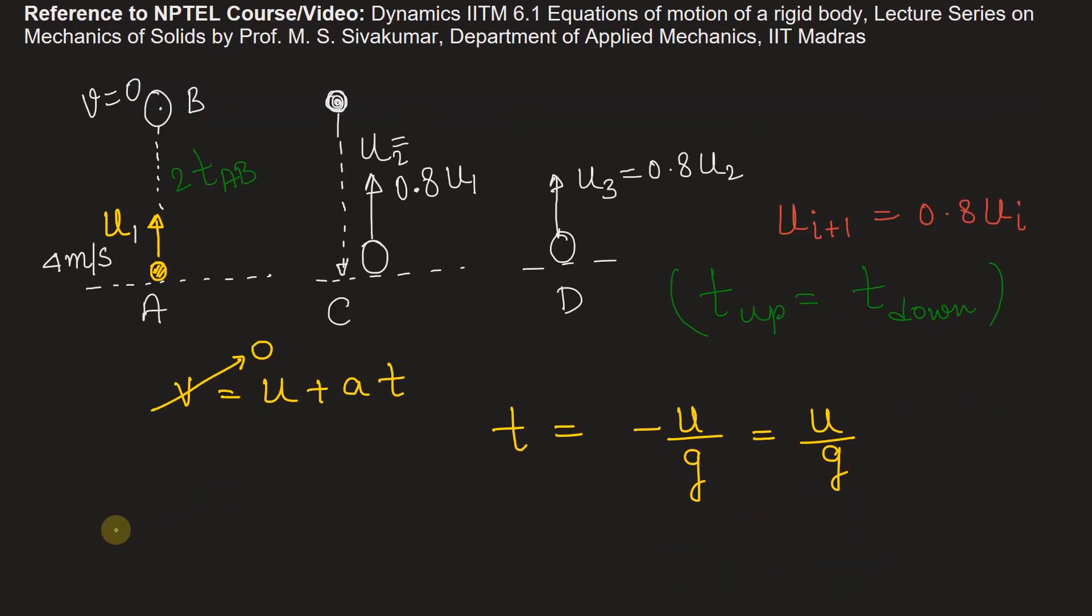Therefore, we can write the total time of flight. So total time of flight will be equal to two times the time to go up, so two times of T, so 2 × u/g.